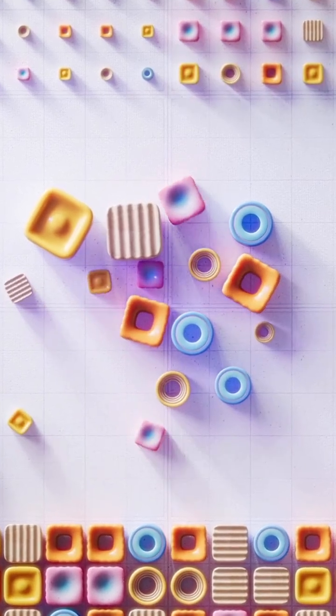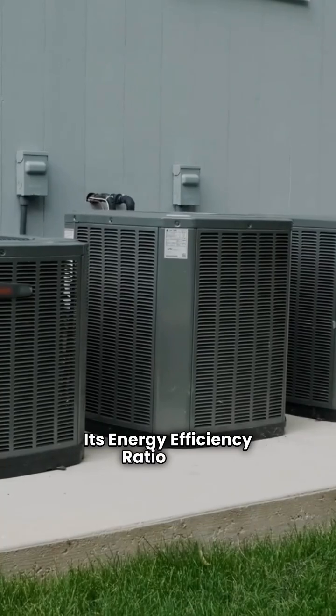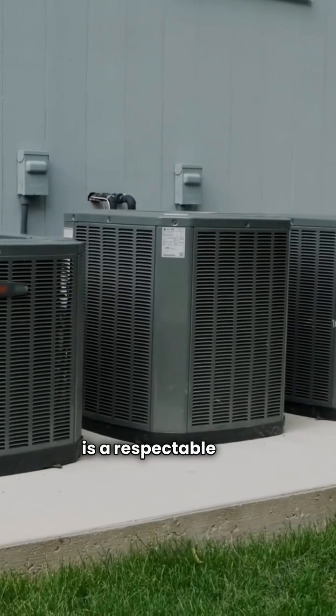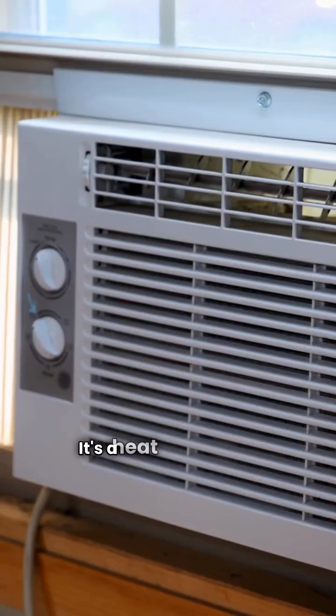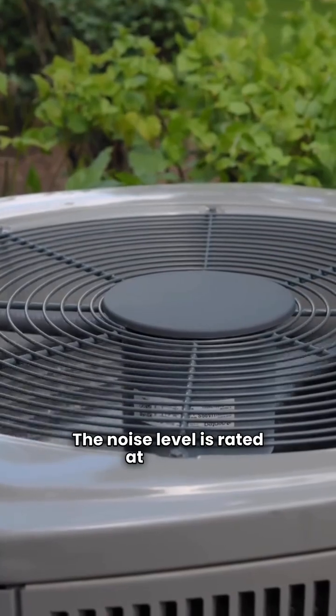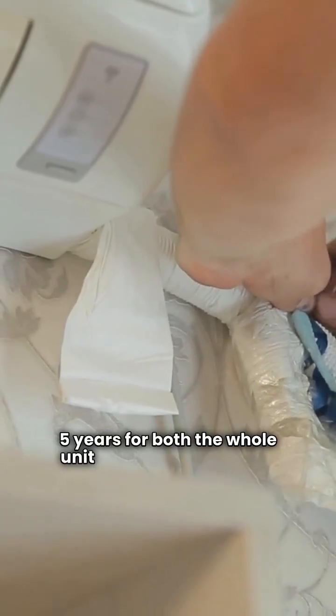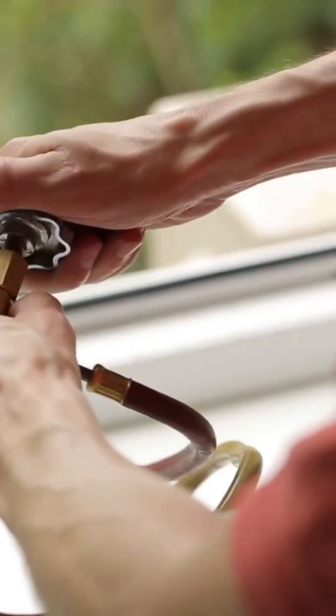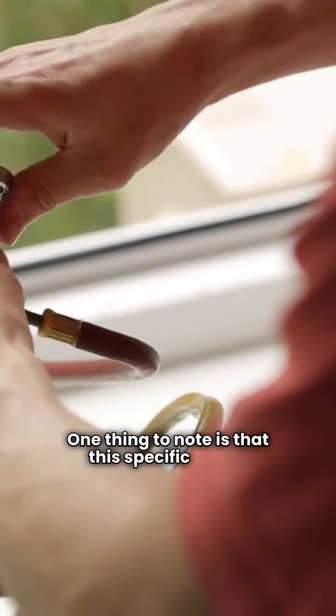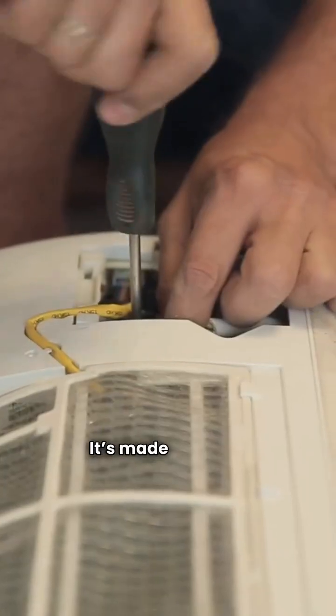Here's where the numbers stand on the TST-PTAC from the data. Its energy efficiency ratio, EER, is a respectable 10.7. It's a heat pump, so it handles both cooling and heating. The noise level is rated at 49 dBA. You get a generous warranty too. Five years for both the whole unit and the compressor. One thing to note is that this specific model doesn't come with built-in Wi-Fi capability. It's made in China.